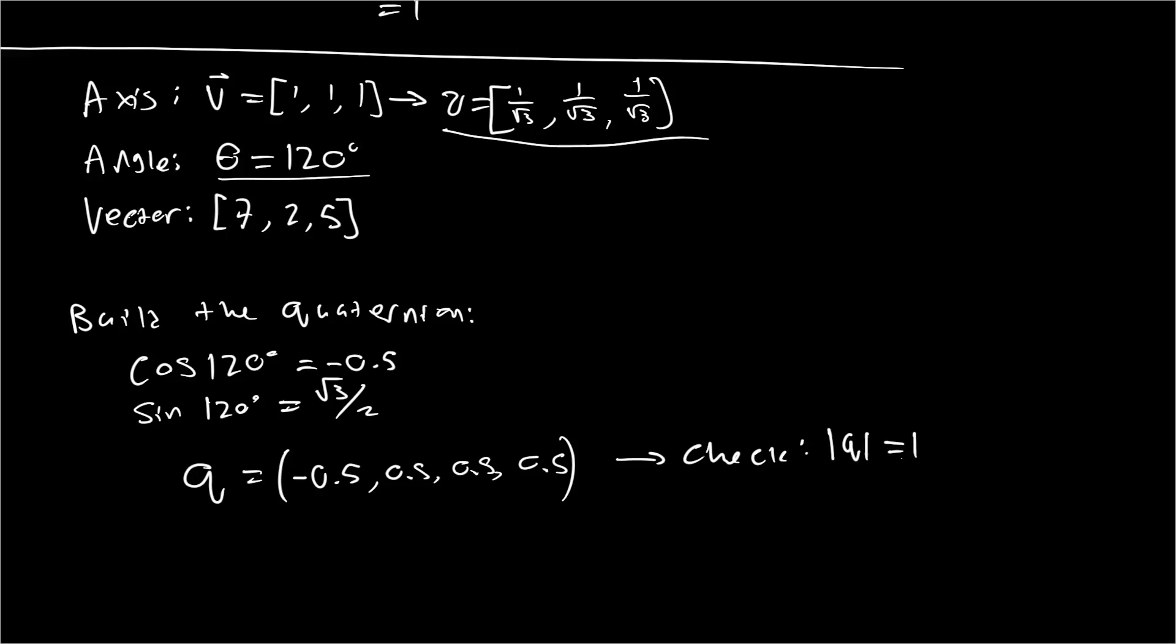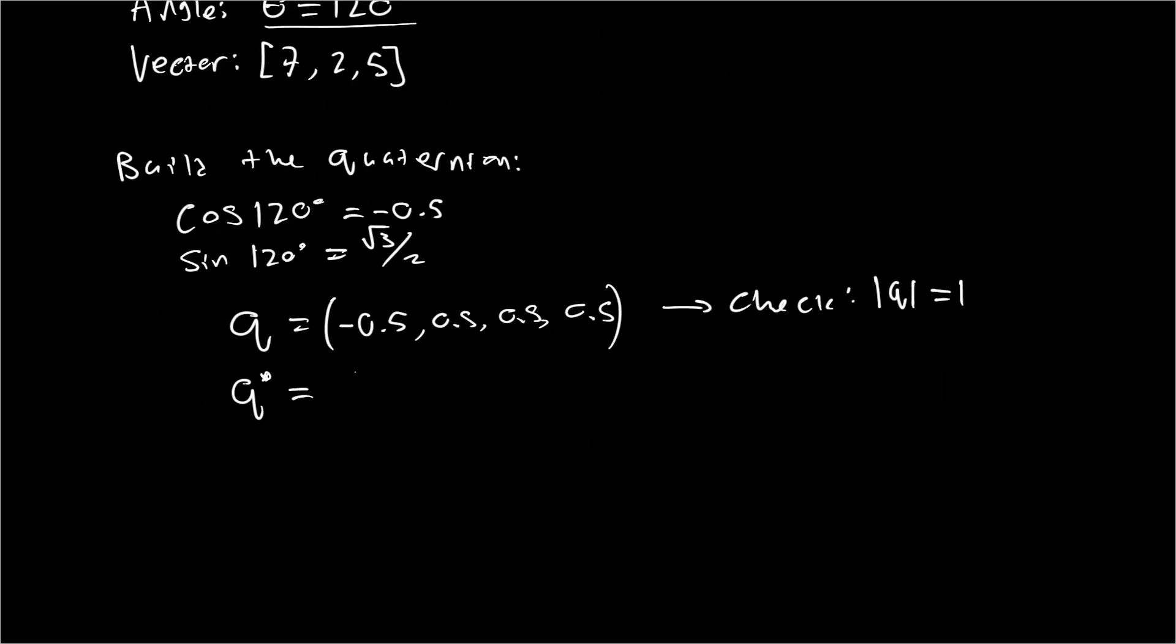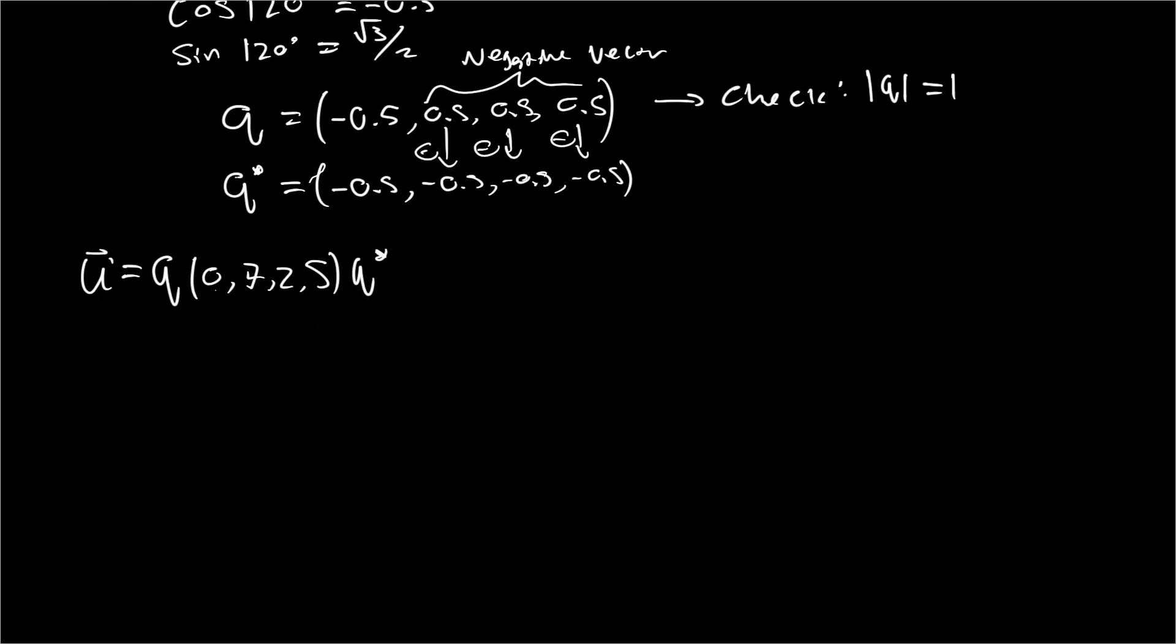We've got a unit quaternion and now we need to define what is this q prime. I never quite defined that. But what we will find is that q star is equal to basically the same thing, only the vector is negative. So the vector components become negative. So we'll have negative 0.5 again, only this time it'll be all negative 0.5. So basically all of these become negative. And that's about everything we need. So we're going to find our rotated vector u prime equals we'll have q times our vector. Our vector needs to be in a quaternion representation, which is relatively easy to do. That's going to be [0, 7, 2, 5], and then that's going to be multiplied by q star.